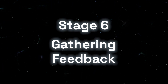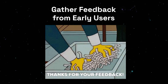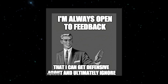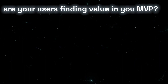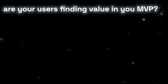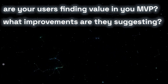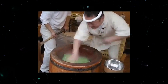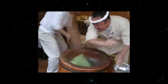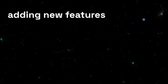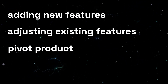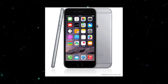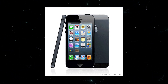Stage six: gathering initial feedback. Once your MVP is live, gather feedback from early users. This feedback is crucial as it will guide the future development and improvement of your product. Are your users finding value in your MVP? What improvements are they suggesting? And for the final stage: iterating and improving. Based on the feedback, iterate on your MVP. This might mean adding new features, tweaking existing ones, or even pivoting your approach entirely. This is an ongoing process as your MVP evolves into a fully-fledged product.